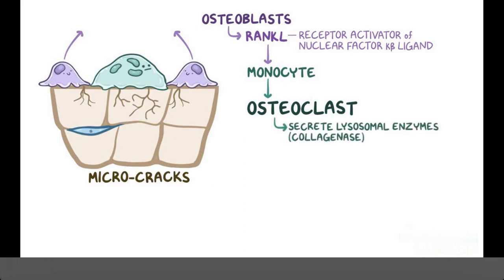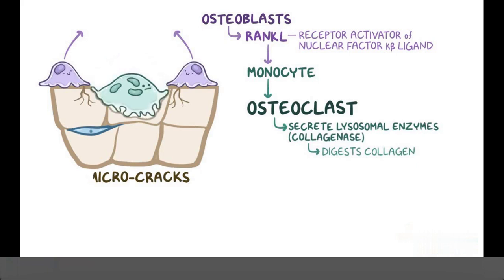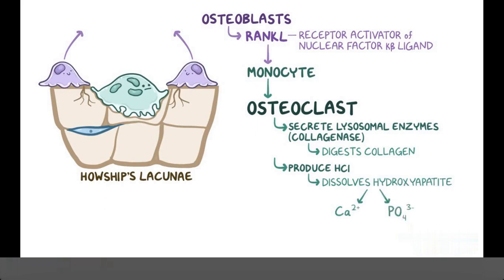The osteoclast starts secreting lysosomal enzymes, mostly collagenase, which digests the collagen protein in the organic matrix. This drills pits on the bone surface known as Howship's lacunae. Osteoclasts also start producing hydrochloric acid, or HCl, which dissolves hydroxyapatite into soluble calcium (Ca2+) and phosphate (PO4 2-) ions, and these ions get released into the bloodstream.